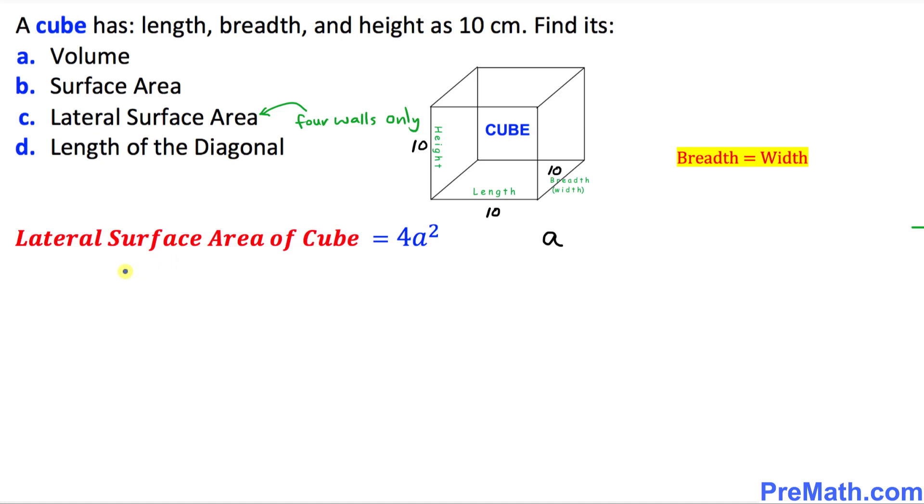Now we are going to calculate the lateral surface area of this cube. Keep in mind that the lateral surface area of this cube is only its four walls, only four walls. The formula is right up here. Let's fill in the blanks.